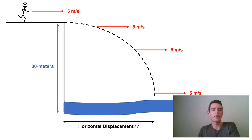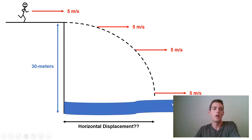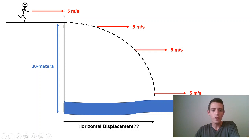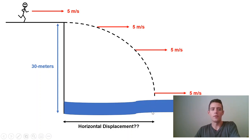Let's suppose for a second that someone is going to run off of a cliff and jump into some water. We'll have the person up here — the cliff is 30 meters high, and the person is running at 5 meters per second. And we want to know how far into this body of water the person will make it. So what is the horizontal displacement of the person?